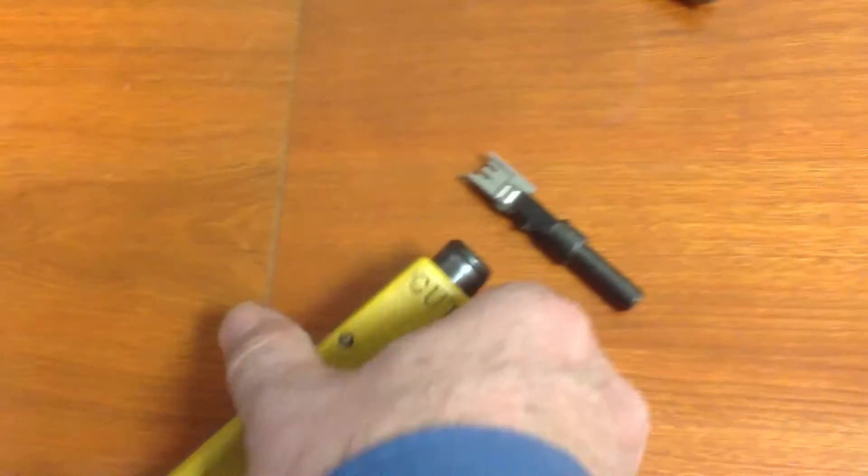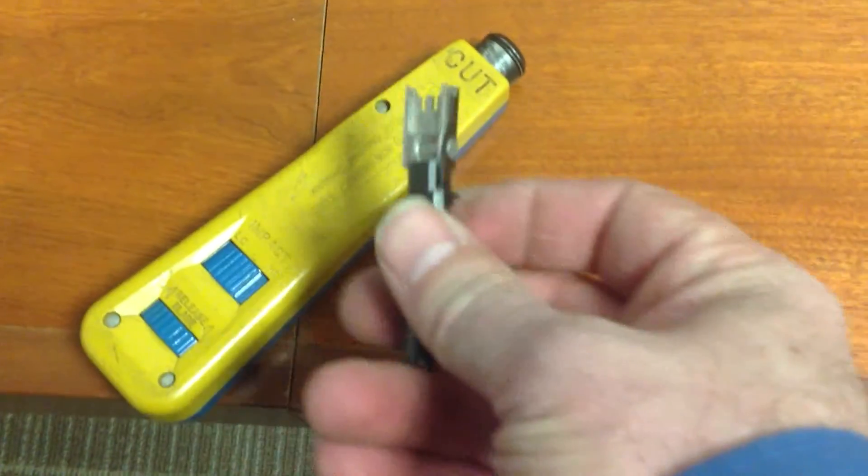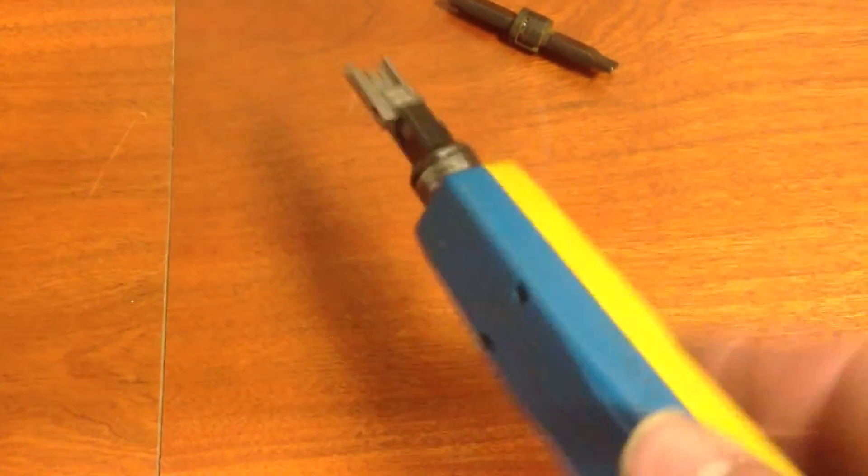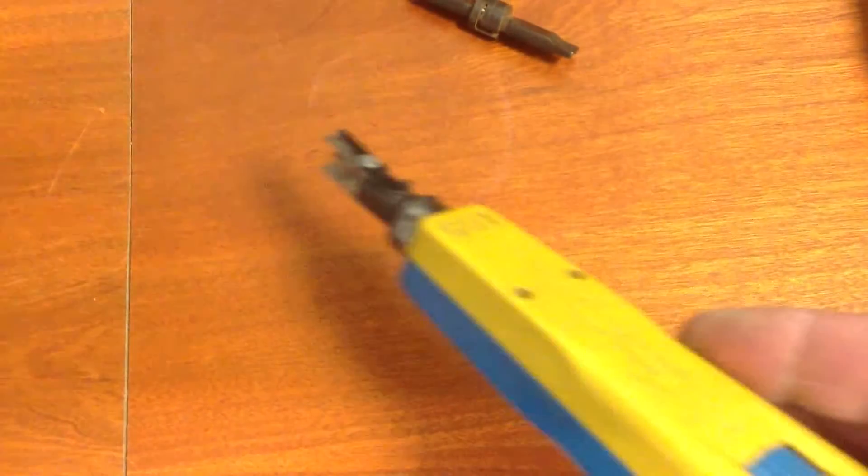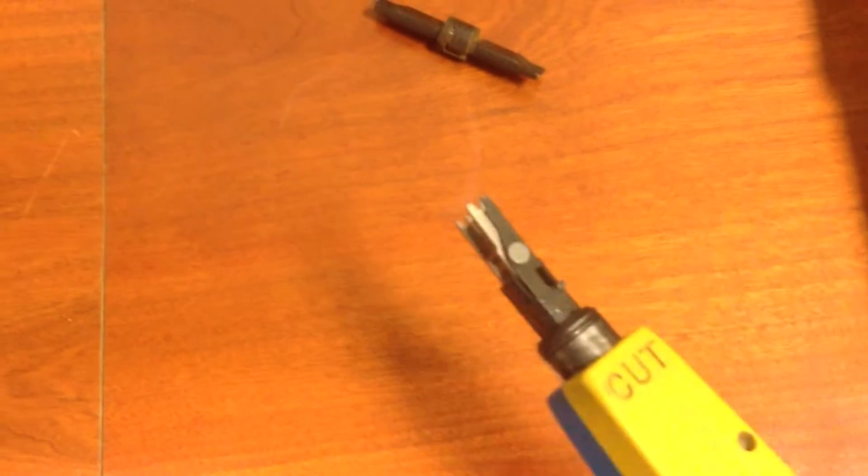Okay, we're back. Had a little technical difficulty there. So this is the BIX punchdown. It goes inside the tool like so. And voila. Now my 66 tool, or my punchdown tool, has been turned into a BIX termination tool.